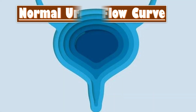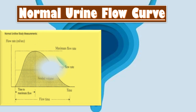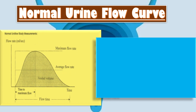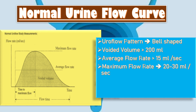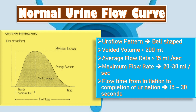The normal urine flow curve is bell-shaped. Normal voided volume is more than 200 ml. The average flow rate is more than 15 ml per second. The maximum flow rate is 20 to 30 ml per second. The flow time from initiation to completion of urination is 15 to 30 seconds.